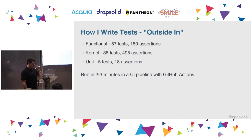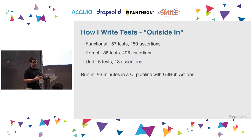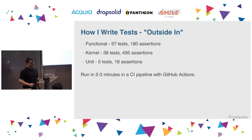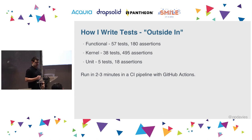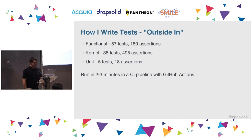Here's a project I'm working on at the moment — the count of tests I've got. If you organize tests in the correct directories you can call them using different test suites. On this project I've got 57 functional tests with 180 assertions, 38 kernel tests, and 5 unit tests. So I've got more tests at the top level and fewer at the bottom — the opposite of the testing trophy. I run these in a CI pipeline on every push using GitHub Actions and they run in about two to three minutes.